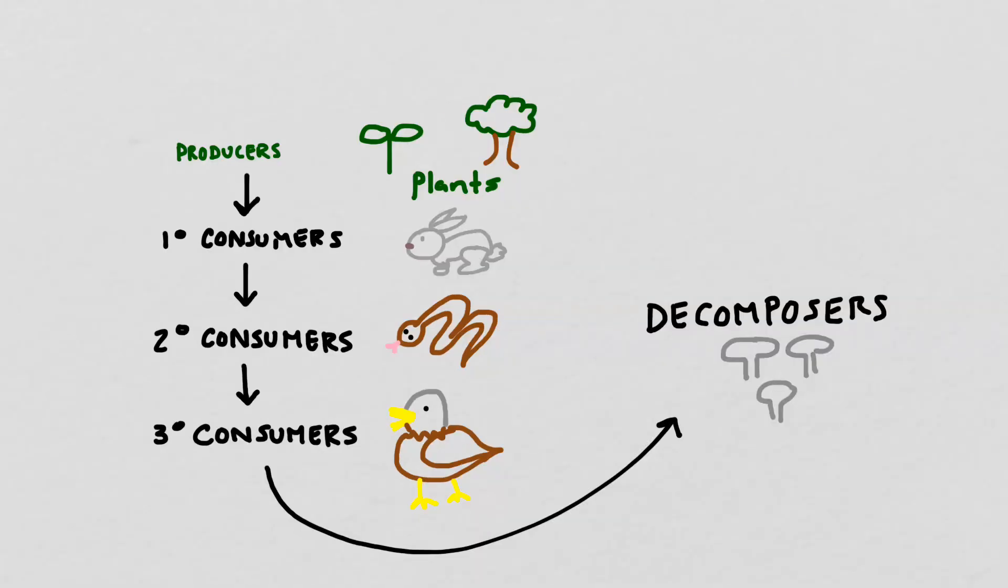We tend to think of the nutrients as flowing from producers to primary to secondary to tertiary consumers and then to decomposers. This is accurate. The decomposers will break down the organic matter from each of these different kinds of organisms and then will return the nutrients to the soil, which allows the nutrients to re-enter the cycle at the producer stage.